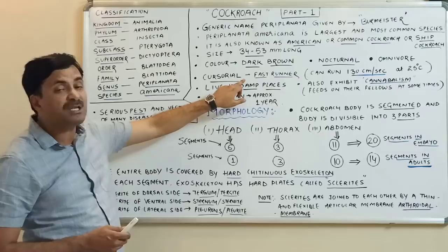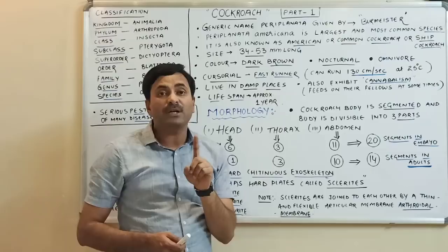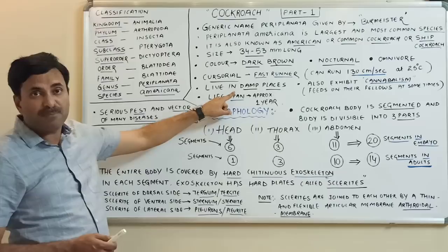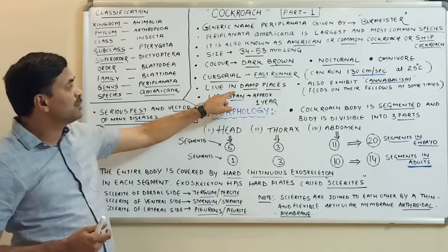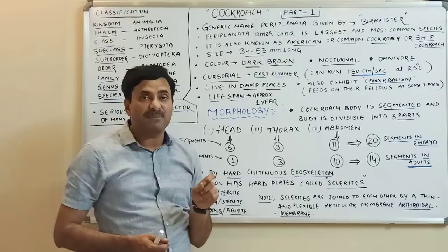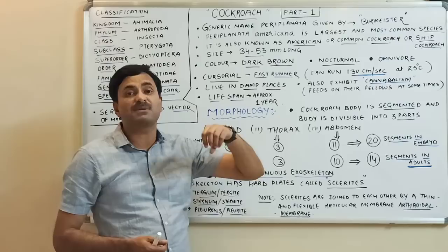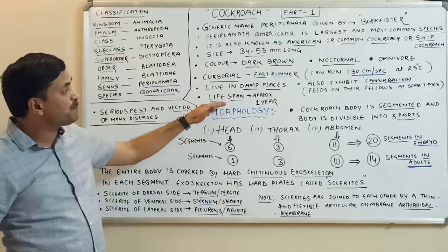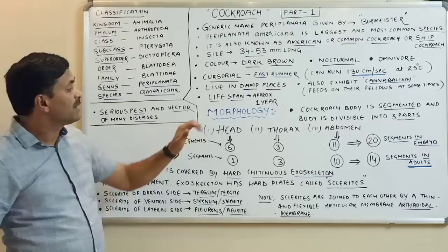They can run at a rate of 130 centimeters per second at an optimum temperature of 25 degrees Celsius. They live in damp, moist, warm places. They also exhibit cannibalism — occasionally they can feed on their own species members or fellows. The lifespan of the cockroach is approximately one year.